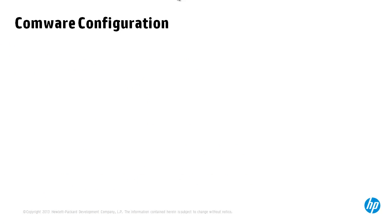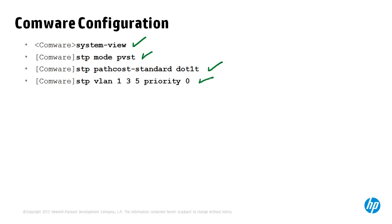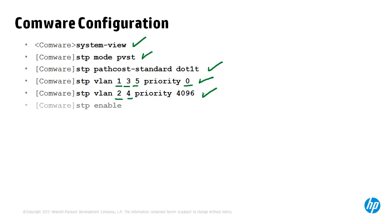To configure PVST on an HP Comware switch: type 'system-view', set the spanning tree mode to PVST, change your path costs (in this case using the equivalent of the long method on Cisco), and set your spanning tree priorities — VLANs 1, 3, and 5 are configured with a priority of 0, and VLANs 2 and 4 with a priority of 4096. Then enable spanning tree if it hasn't been previously enabled.